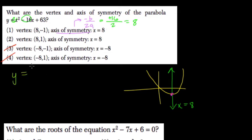So y equals x squared, so 64 minus 16 times x, or minus 16 times 8, plus 63.